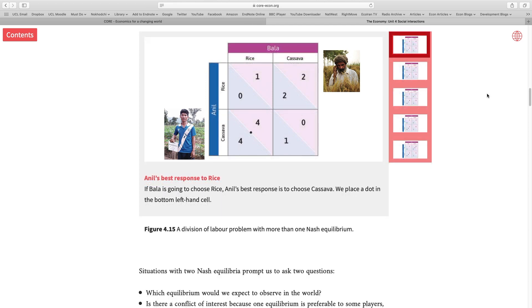Now, as before, in order to find out if this game has any Nash equilibrium we need to put ourselves in the shoes of each player and analyze the game. I'm now inside Anil's head. I'm Anil now. What am I going to do if Bala decides to produce rice? If I produce cassava I'll get four, rice I'll get zero, so producing cassava is my best response if Bala produces rice. I put a dot here to mark my best response, Anil's best response in this case.